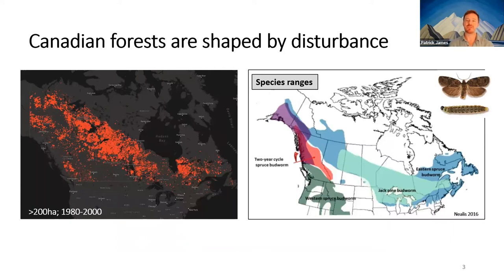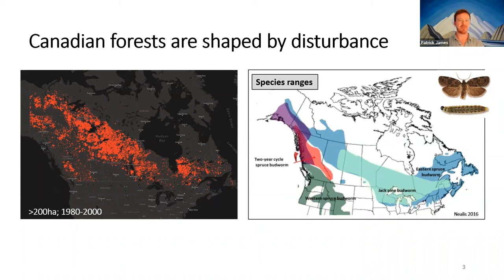We know that Canadian forests are shaped by disturbance — a system that has evolved since deglaciation. Many of our tree species are adapted to intermittent disturbances. On the left is an image of all wildfires in Canada from 1980 to 2000 larger than 200 hectares. On the right, we can see species ranges of the main forest insect pests across Canada, including the eastern spruce budworm in darker blue.